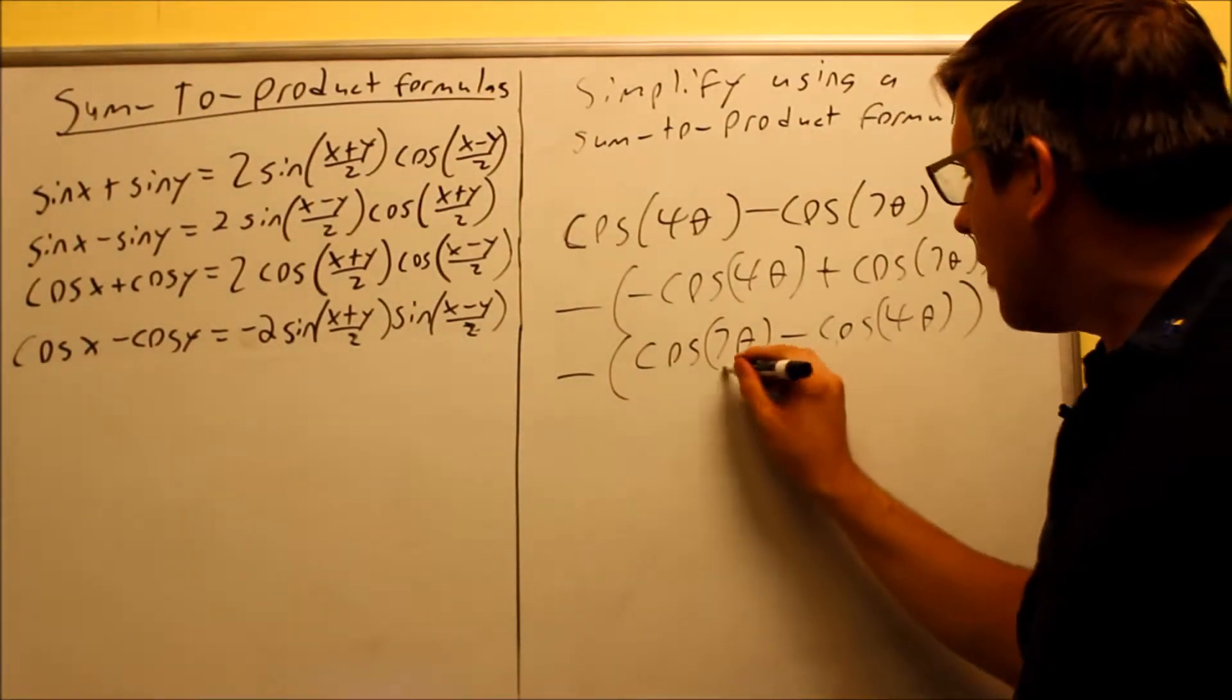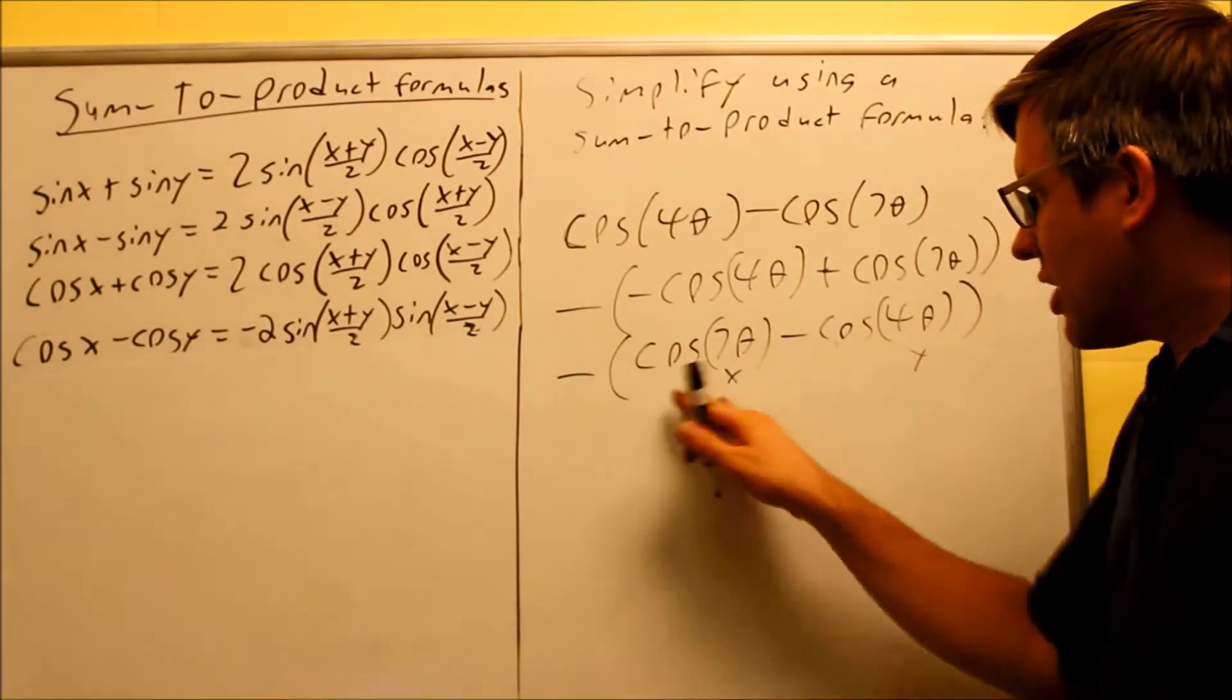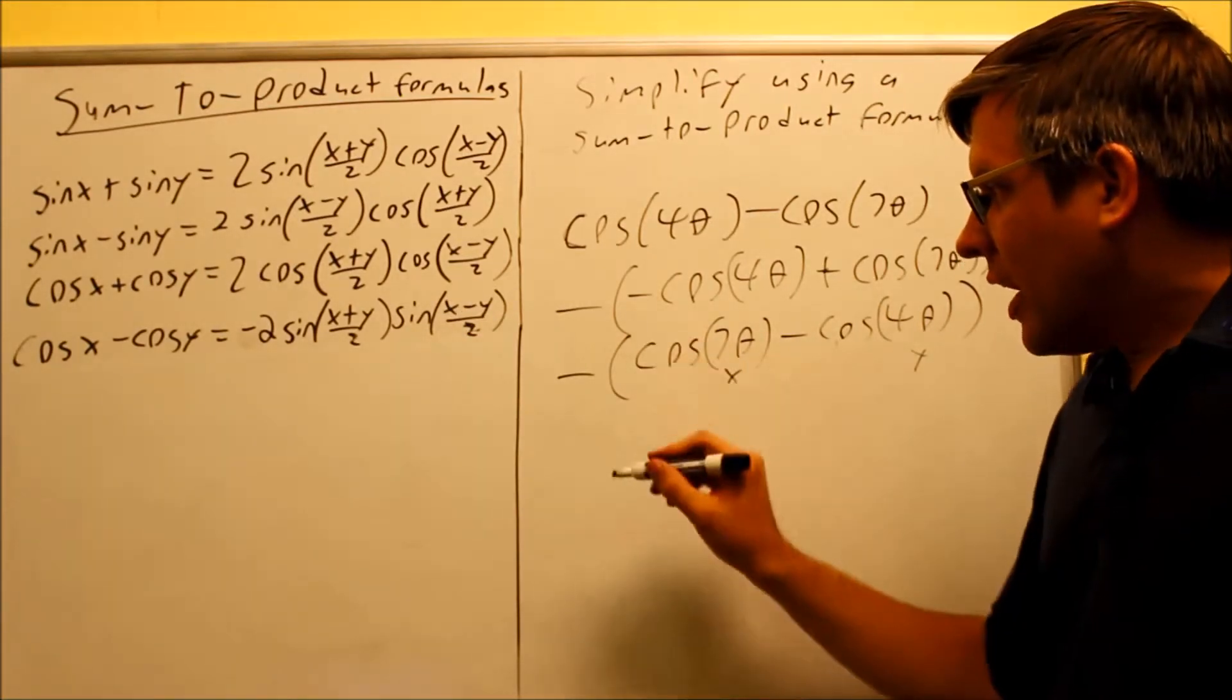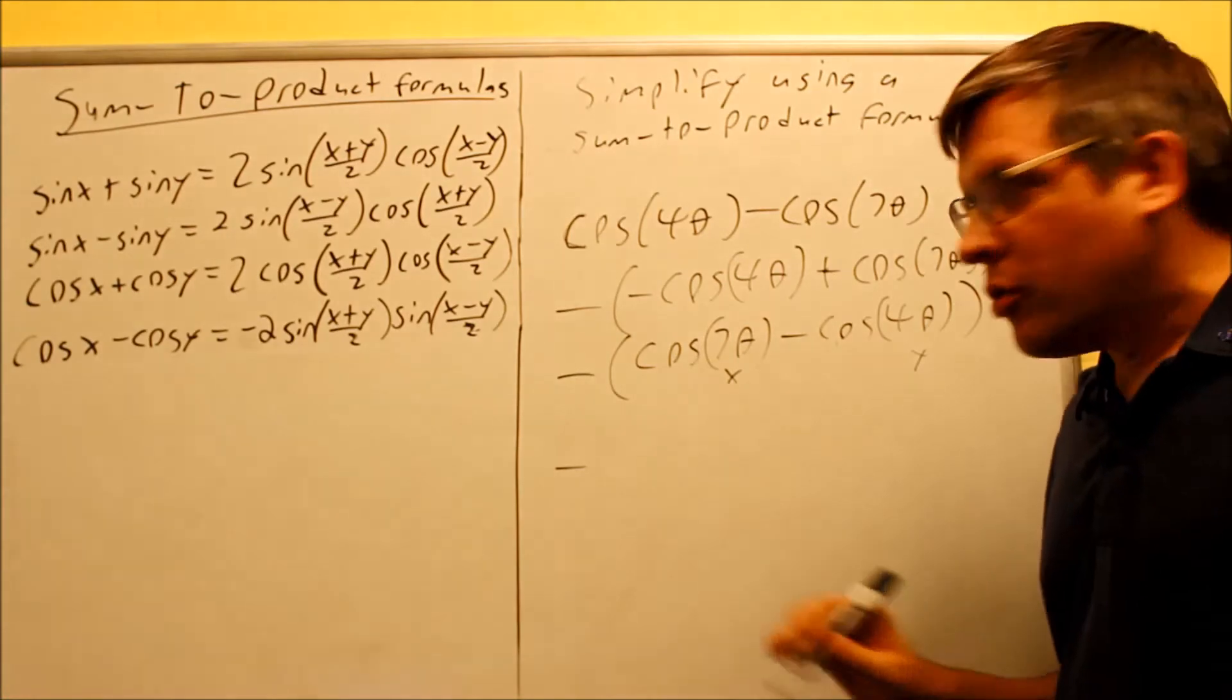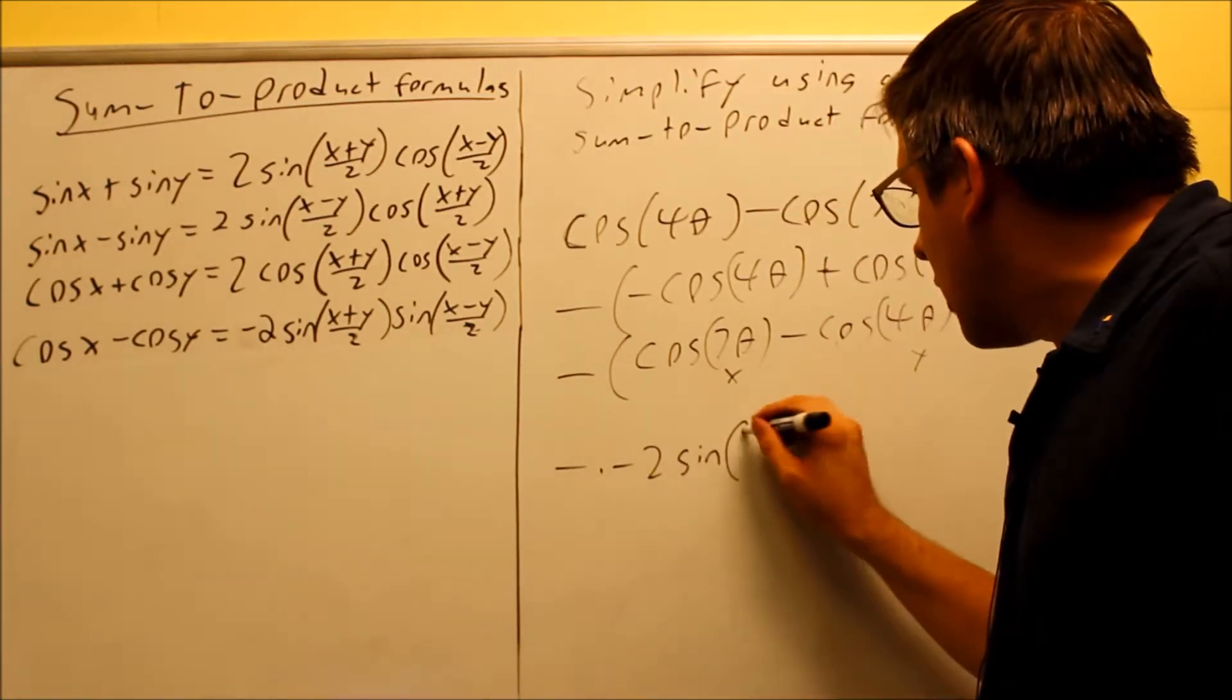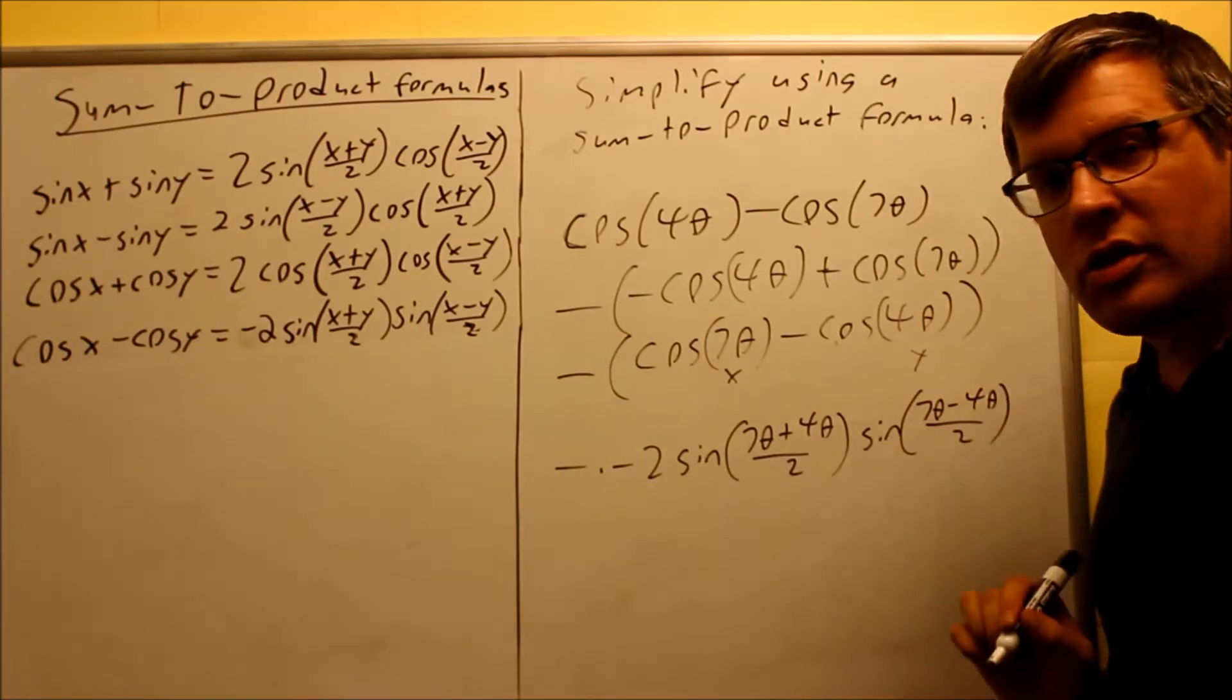So now by doing that, now I can make the x be 7 theta and the y is going to be 4 theta. I'm still going to use the fourth formula on that one except now I've just switched the order by factoring out a negative. So now when I do this, when I get to the part where I'm subtracting there I don't have to worry about having a negative angle here. Now I have to be careful because I have a negative that I factored out, but there's also a negative here in the formula itself. So I have a negative times negative 2. So I actually have two negatives happening there in that case. Then I have sine of x plus y 7 theta plus 4 theta over 2. Then I have sine of 7 theta minus 4 theta all over 2.